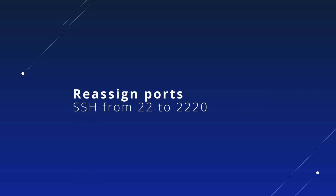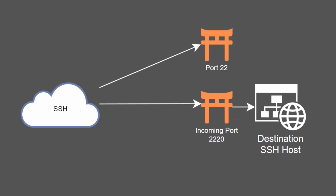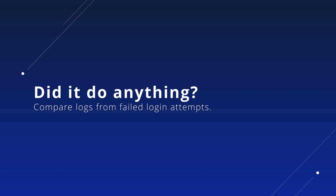It's possible to reassign port numbers to a different unused port — for example, assigning SSH to port 2220 instead of 22. This is usually done to provide low-level security. Moving SSH from port 22 to another port could stop script kiddie attacks, where attackers simply run a pre-built script on port 22 without port scanning. To see if moving ports has any effect, you can compare logs of failed login attempts before and after moving the port — you should see fewer failed login attempts afterwards.